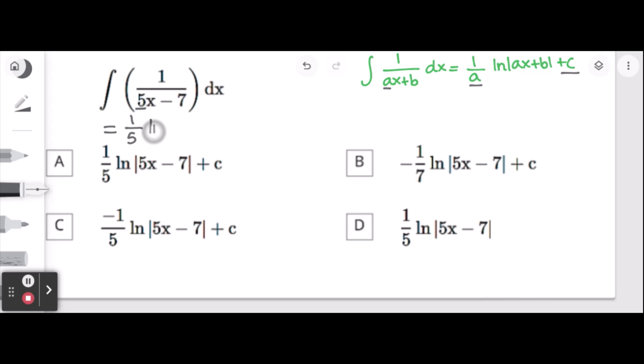Then ln which is the natural log of the given function below which is 5x minus 7. We're done with this part then we're just going to add plus c at the end. And that's our final answer which is choice A.